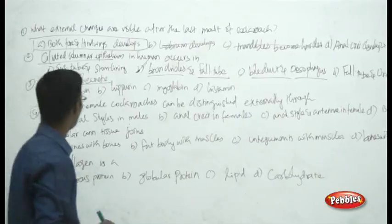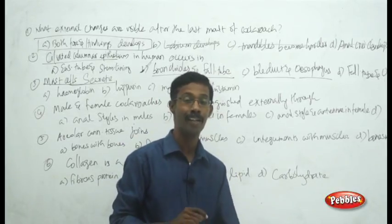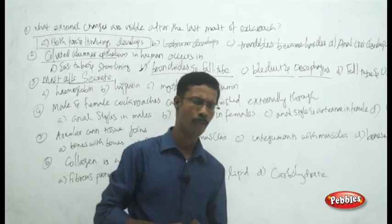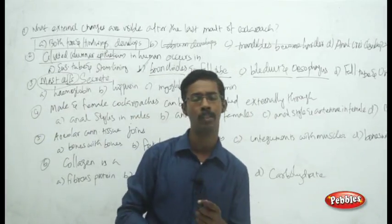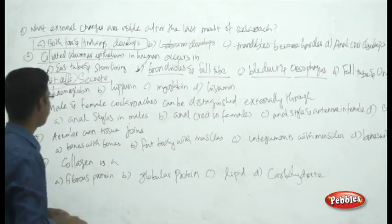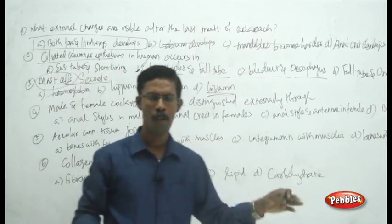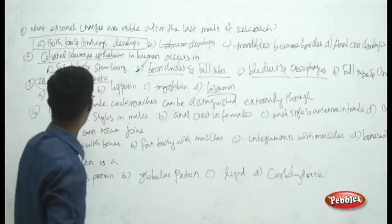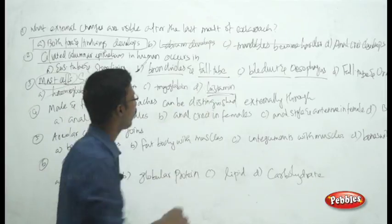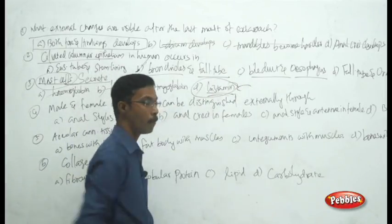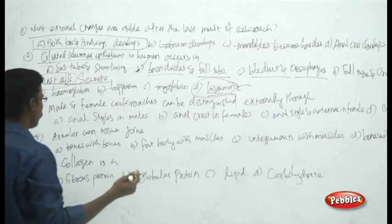Next question: what do mast cells secrete? Mast cells are a type of blood cell involved in hypersensitivity reactions. You can eliminate myoglobin and hemoglobin — these are proteins of muscles and blood respectively. Hemoglobin is found in RBCs. The answer is histamine — mast cells secrete histamine, which participates in hypersensitivity reactions. Details will be discussed in human physiology.